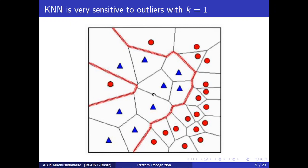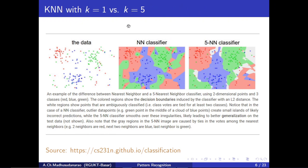In order to reduce this problem, we will try to increase the k value — for example, k equal to 3 or k equal to 5. Let's consider the case where k equals 5 and compare with k equals 1. Here we are having three classes: red color is class 1, blue color is class 2, and green color is class 3.